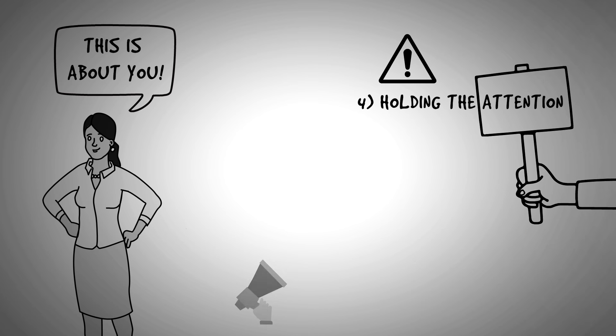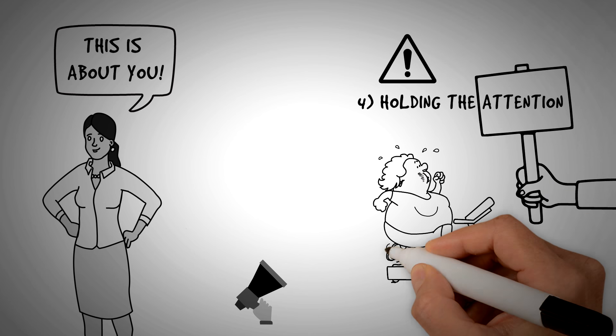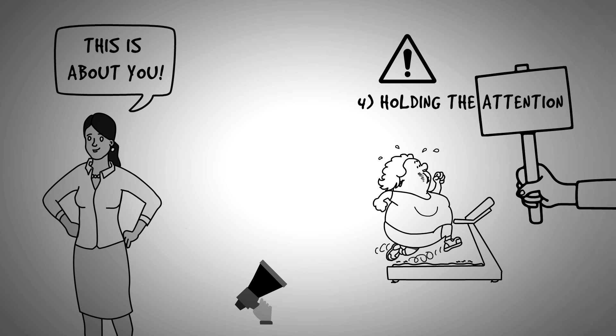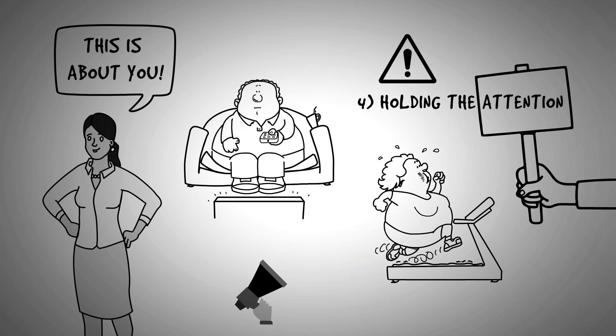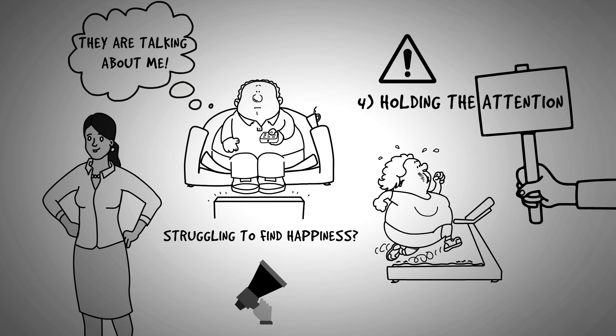This is why you hear a lot of commercials use language such as, in your 40s and overweight, here's our solution. Or are you a male in your 50s who's struggling to find happiness? By calling out these common characteristics, they're talking to you. They're talking to the specific person. So if you manage to make the topic about the other person, they will pay attention to you almost indefinitely.